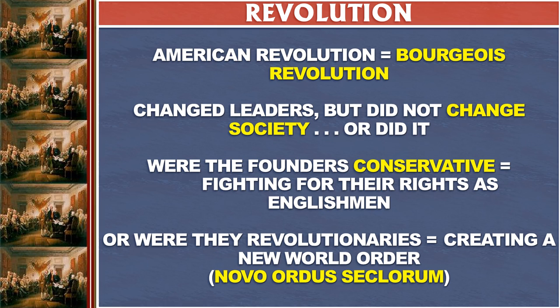However, some historians, like Gordon Wood, have said that the American Revolution was actually a radical revolution. We can think about whether the founders were conservative, because what they were arguing for was their rights as Englishmen — rights they had as members of the English Empire — or whether, as in the words of the Declaration of Independence, they grounded their sense of rights not on rights as Englishmen, but as rights as human beings.